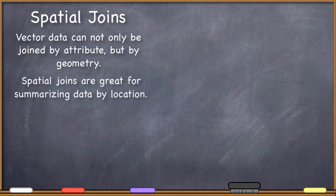One of the things that spatial joins are excellent for is summarizing feature information based on location. It depends on information in the attribute tables, or it appends information in the attribute tables based on location.